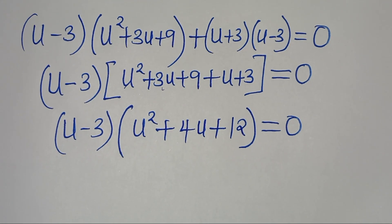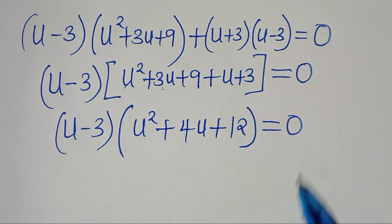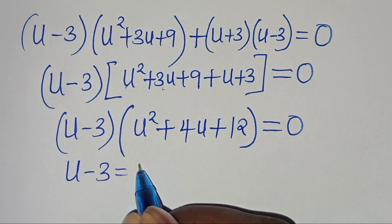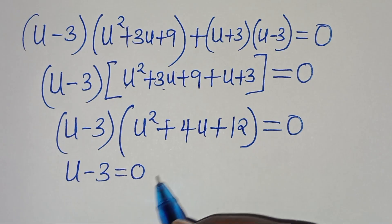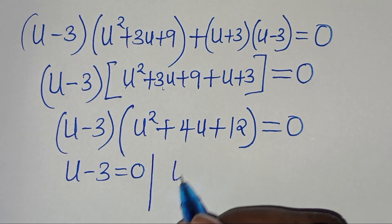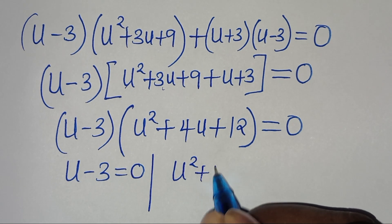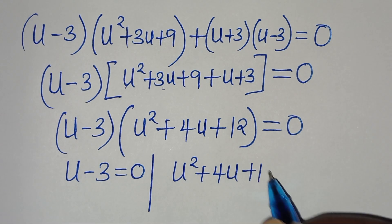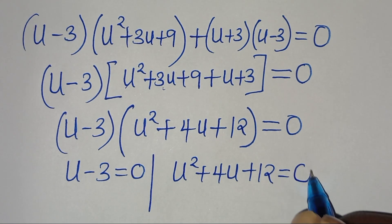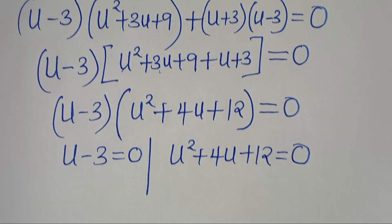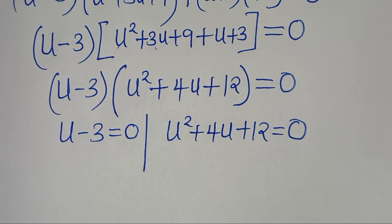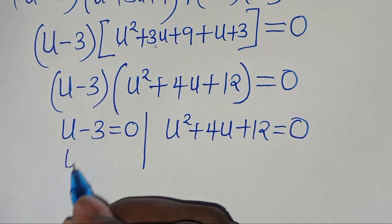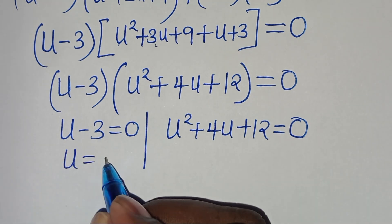This implies that we have two parts here. The first part is u minus 3, this is equal to 0. And the second part is u to the power of 2 plus 4u plus 12, this is equal to 0.